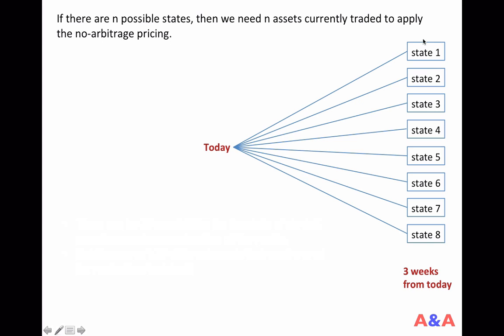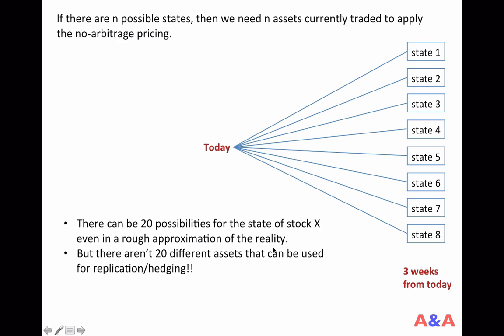In this picture there are eight possible states for the future, which is three weeks from today. But in general, the farther future we consider, the more possibilities there should be. If we consider something like a three-month or six-month period, there can be 20 possibilities for the state of stock X even in a rough approximation of reality. But there aren't 20 different assets that can be used for replication or hedging — so we've got a problem.